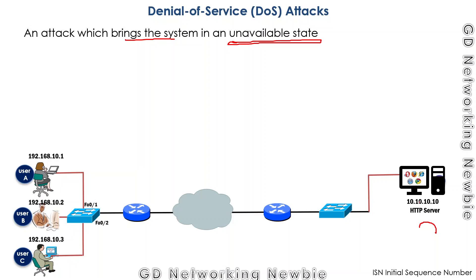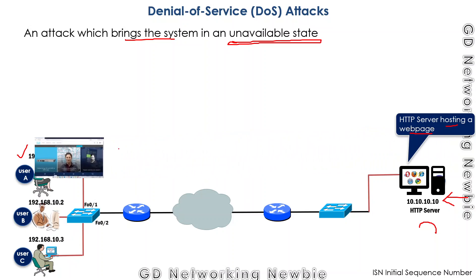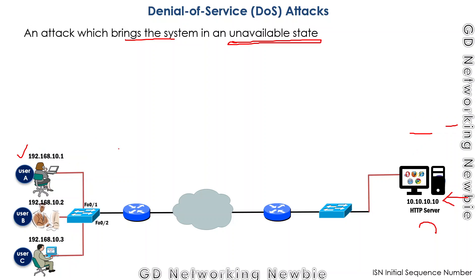For example, let's suppose that we have this HTTP server hosting a web page. When this client sends a request for the contents of that web page, the server will respond back with the requested contents. Now, for sending this data or the requested contents, the client and the server have to establish a TCP connection.